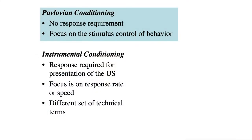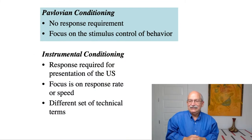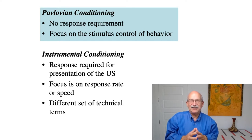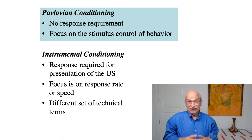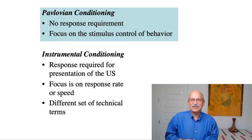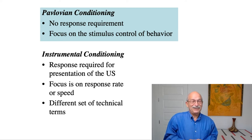But before we get to talk about Thorndike, let's review the critical features of an instrumental conditioning situation that make it different from Pavlovian conditioning. In Pavlovian conditioning, a pervasive feature of those procedures is that there is no response requirement. The conditioned stimulus is presented followed by the unconditioned stimulus, and the unconditioned stimulus comes whenever it's scheduled to occur. The organism doesn't have to do anything to produce it.